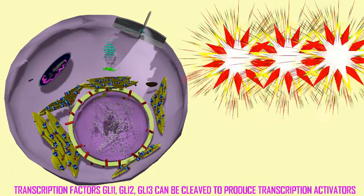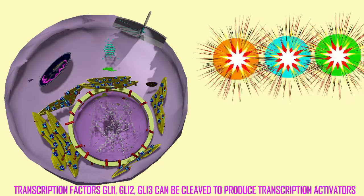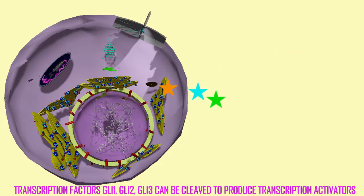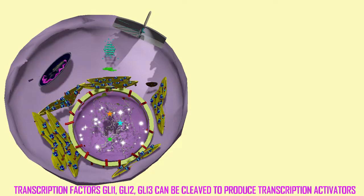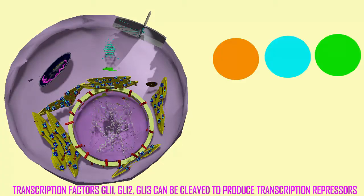In this example, there are three proteins: Gli1, Gli2, and Gli3, named for the glioma they were first discovered with — a type of cancer. These proteins can travel to the nucleus after being cleaved in one way and activate transcription.